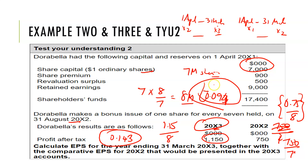That's how we deal with bonus issues — always take them right from the start of the year. When I say start of the year, we're assuming that's all that happened and there were no market issues. If there were, we would stop at the bonus date. In this scenario, the full year is taken into consideration because that's all that happened for the whole year.